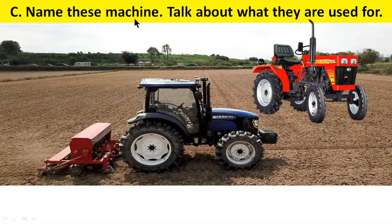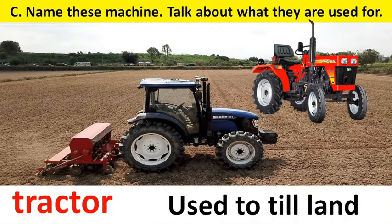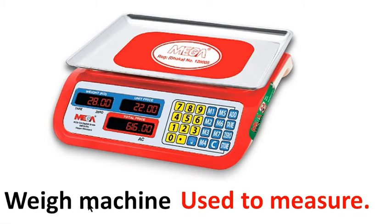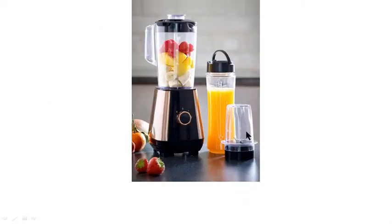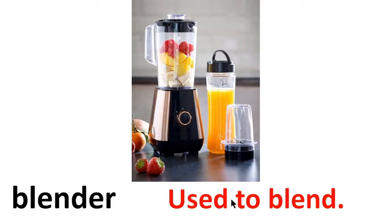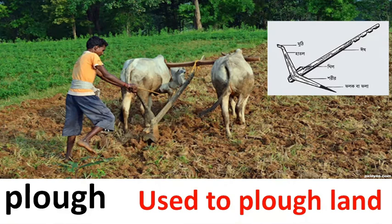Question number C. Name this machine and talk about what they are used for. This is tractor, used to till land. Weigh machine is used to measure. This is blender, used to blend or make juice from fruit. This is plough, used to plough land.